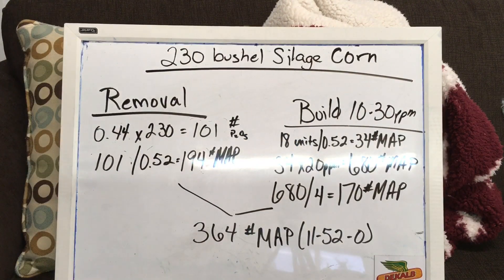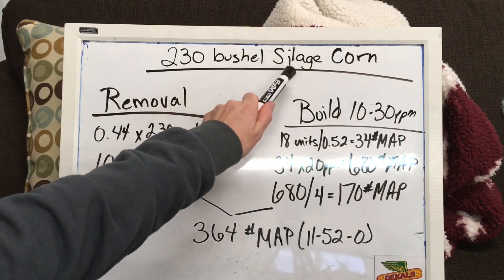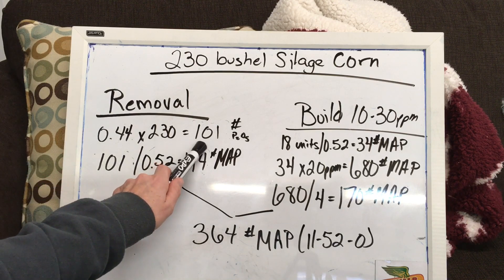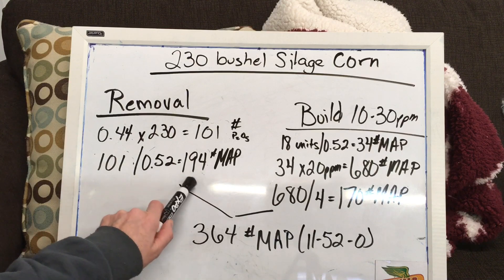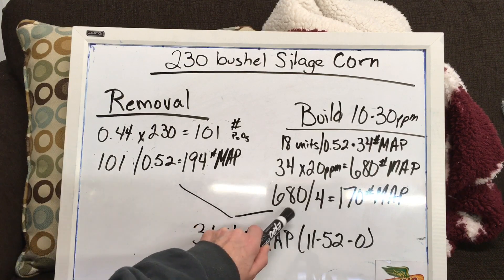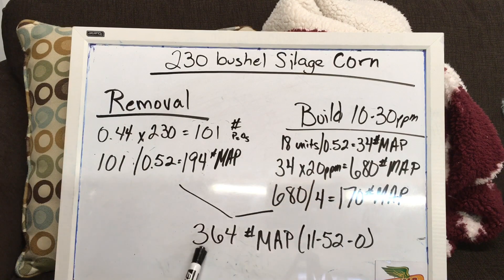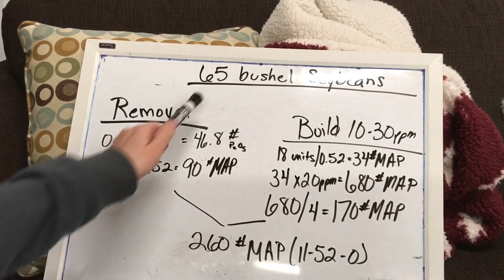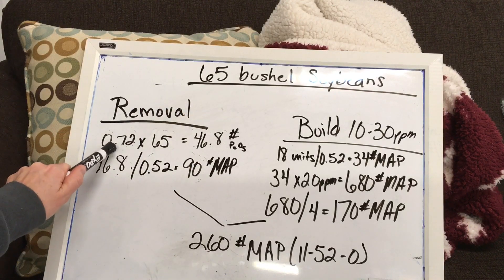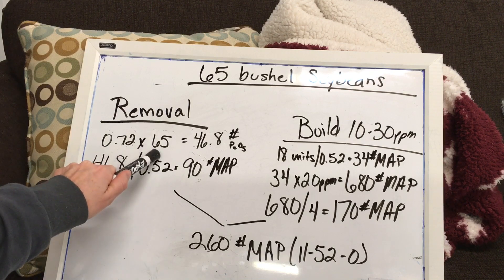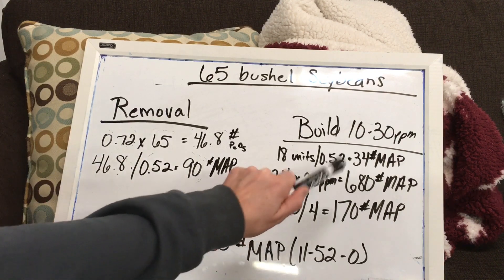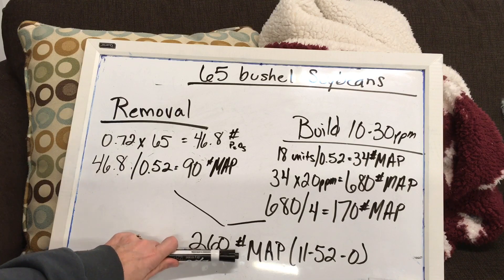If I am figuring fertilizer for a 230 bushel silage crop, my removal goes up to 0.44 units of P2O5 per bushel, which comes to 101 units of P2O5, turning into 194 pounds of MAP fertilizer. My build stays the same — that gives me a total of 364 pounds of MAP per acre to cover removal and build on silage corn. Switching to soybeans at a 65 bushel yield, I've got a removal of 0.72 units P2O5 times 65 bushels — I need to replace 46.8 units, which is 90 pounds of MAP, plus my build, giving me 260 pounds of MAP.